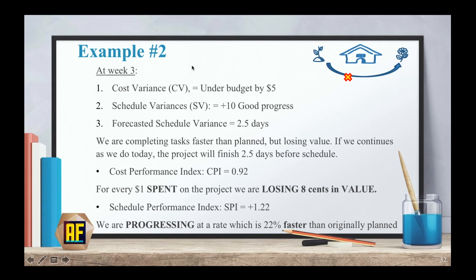Here are the answers for the second example. The cost variance is bad — we got a negative answer, so we are under budget by $5. The schedule variance was plus 10, so we're making good progress, and we should be 2.5 days ahead of schedule according to the FSA. This means we are completing tasks faster than planned but losing value. For every dollar spent, we are losing 8 cents in value — note that we lose 8 cents, not 92 cents. The SPI was 1.22, meaning we are progressing at a rate 22% faster than originally planned.